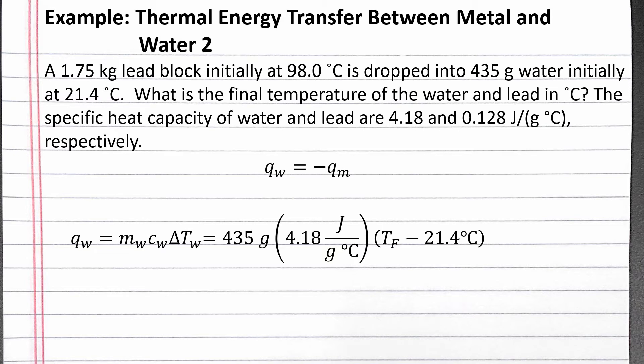For our metal, we want to make sure we convert 1.75 kilograms to grams, so we enter 1750 grams for the mass, 0.128 joules per gram degrees Celsius for the specific heat capacity, and T final minus 98.0 degrees Celsius for the change in temperature.